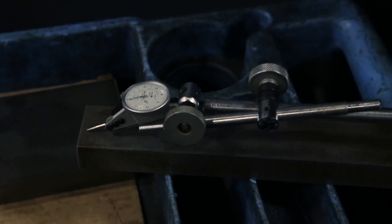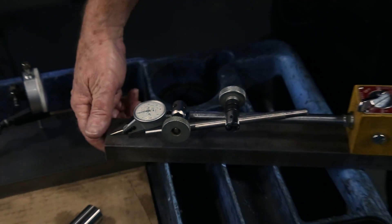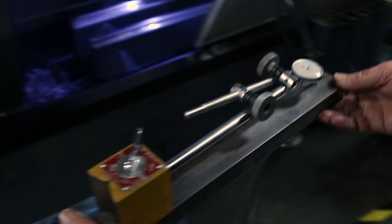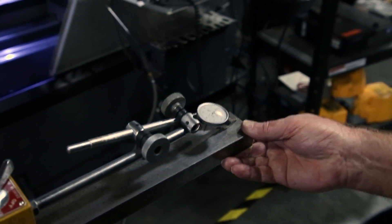So here's an easy way to check to see if you have indicator droop. Set your indicator on a bar like this. Right now it's set on zero. Turn it upside down.